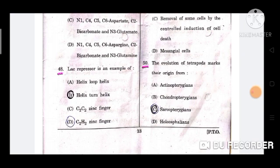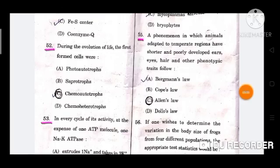Question number 50: The evolution of tetrapods marks their origin from? The correct option is C, Sarcopterygii. During the evolution of life, the first formed cells were? The correct option is C, chemoautotrophs.